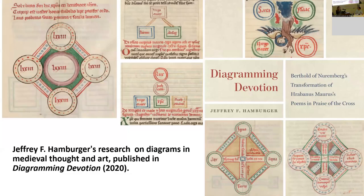One illustrative example is Jeffrey Hamburger's research on diagrams in medieval thought and art, since diagrams are fundamentally relational in character and network visualization would not be possible without graph theory, which also includes diagrams. Another example is Hamburger's inquiry into medieval illuminated manuscripts through the prism of hypertext. All these new perspectives, based on the principles of modern technologies and the functioning of the contemporary world, allow us to enrich our existing methods in art history — enabling us to ask new types of questions and find new ways of solving them.